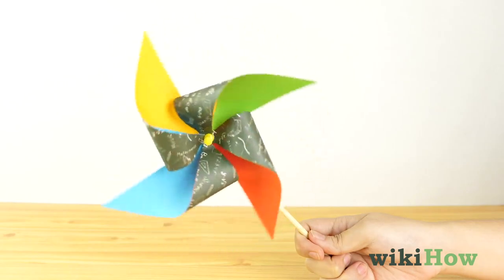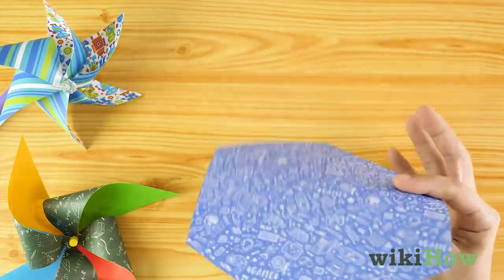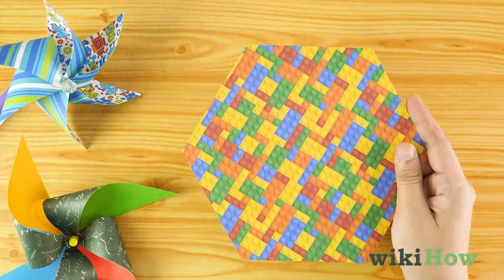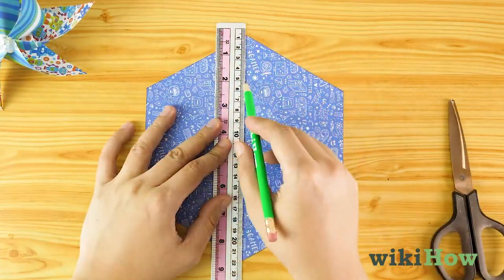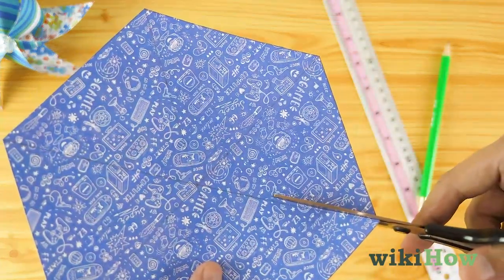For a more complex pinwheel, use a hexagon shaped piece of paper instead of a square. Trace and cut the lines just like you would for a simple pinwheel.